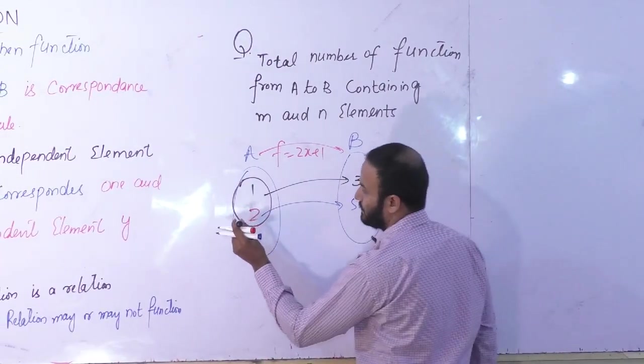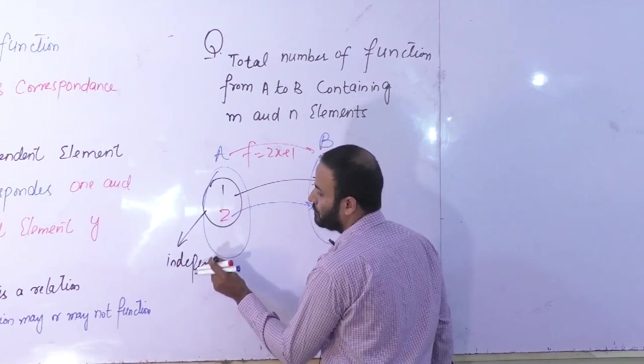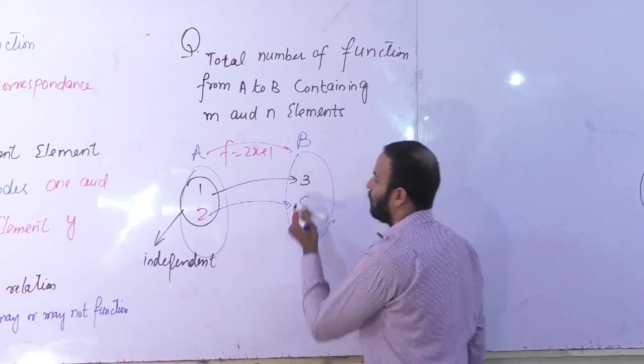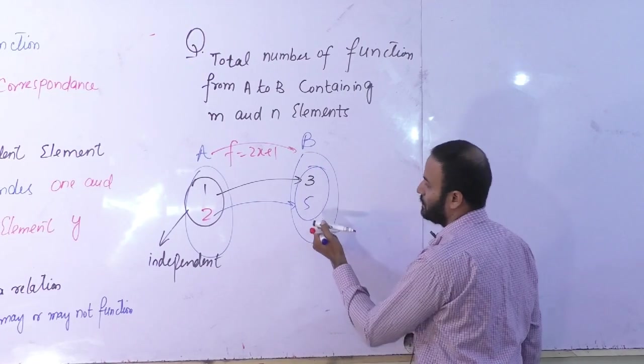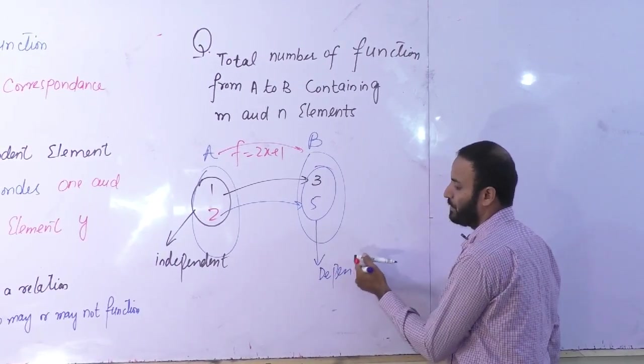All the elements in set A are independent elements. All the elements in set B are dependent elements.